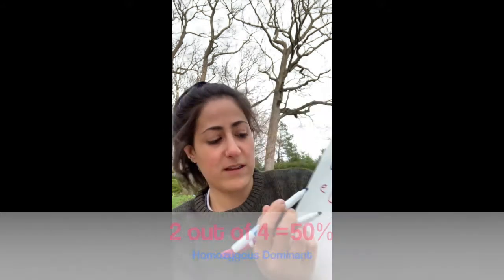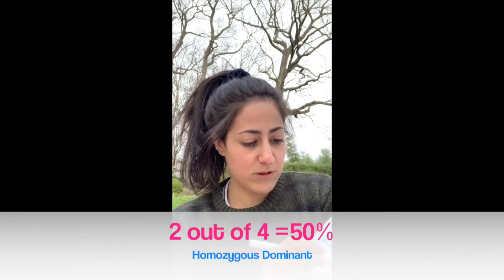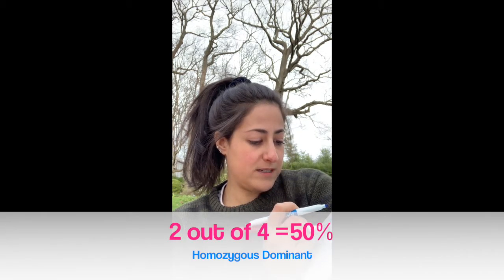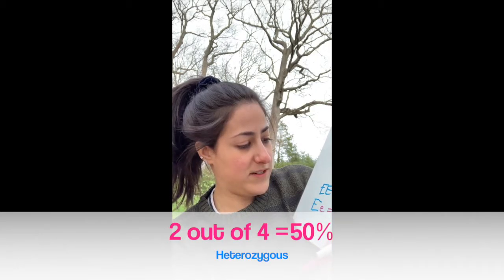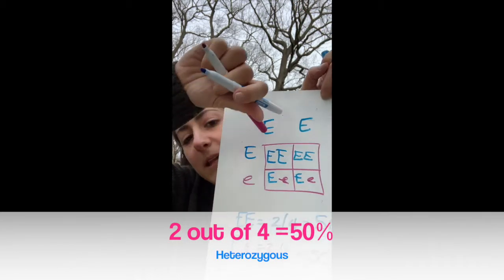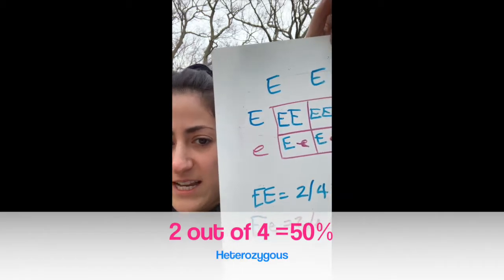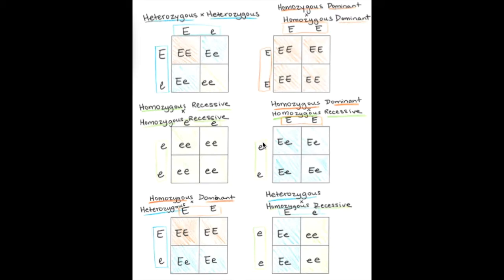Our last combination: crossing homozygous dominant with heterozygous. The two dominant E's from the top pair with the capital E and lowercase e from the heterozygous parent. We typically write capital letters first, just like starting a sentence. Two of the four boxes end up homozygous dominant — 50%. The other two boxes are heterozygous — 50%. So crossing a homozygous dominant with a heterozygous parent gives you no recessive offspring at all.